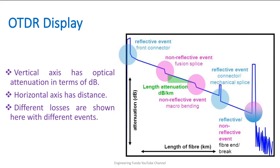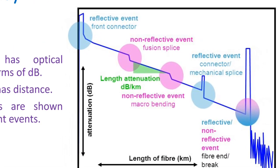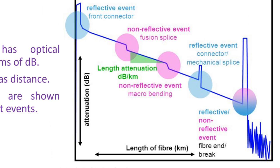Let us see how OTDR displays data. On the y-axis there is optical attenuation in terms of dB, and on the x-axis there is the length of fiber. As the signal is given from one end, the strength of the signal is maximum at the start, and as you move toward further distances the signal strength decreases. As you increase the distance, overall attenuation is increasing, meaning signal strength decreases, which you can see by the downward slope.